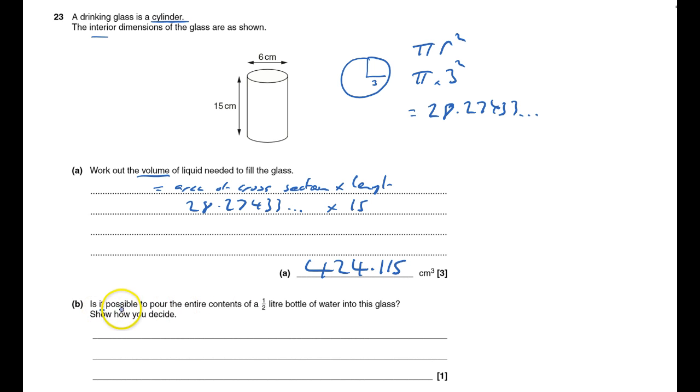Is it possible to pour the entire contents of a half litre, where a half litre is a litre's thousand, and so that'll be 500 millilitres, or which is exactly the same as 500 centimetres cubed into this glass. Well, it's not, is it? Absolutely not. It's 500 here. The volume is 424.